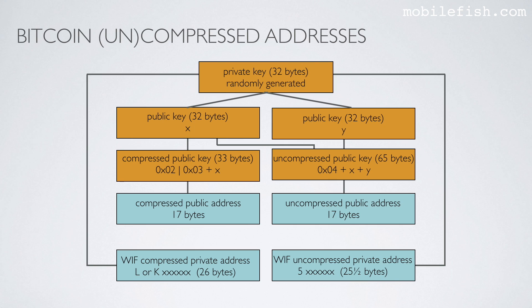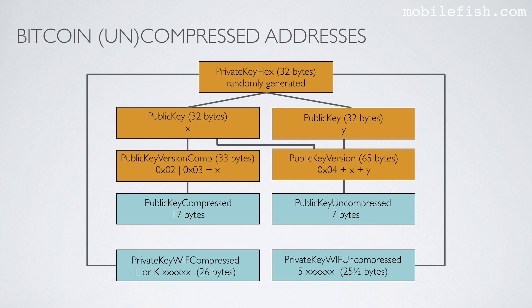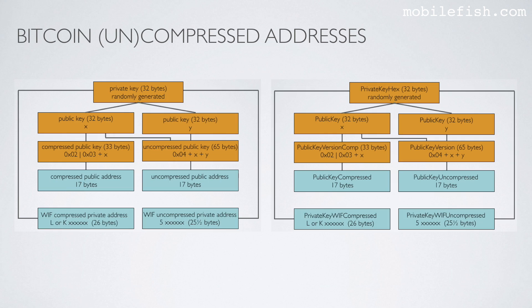In Part 16 of the blockchain tutorial series I used a drawing to explain what Bitcoin compressed and uncompressed addresses are. The Cryptocurrency Address Generator and Validator tool, however, uses a different naming convention. I have placed both drawings side by side so you can easily see the difference. The major difference lies in the usage of the word 'key' instead of 'address'. Please be aware of this.